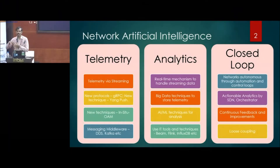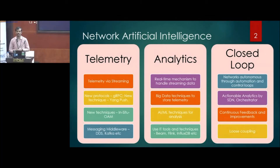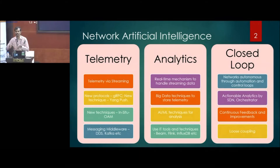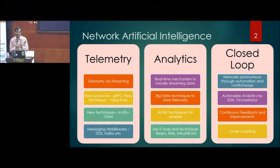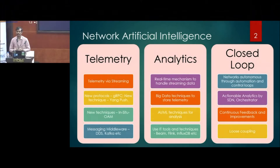For example, if a DDoS attack has been detected, how can we mitigate it? Once the analytics detects a DDoS attack — what kind of attack it is and where the location is — it can give that information to the controller, which can then take action on the network and mitigate it.